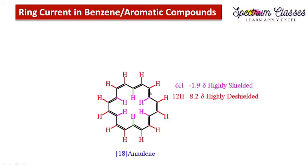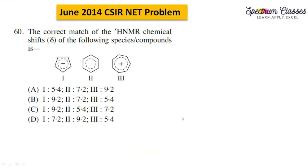Here is an example from a CSIR net question. This is the structure of 18-annulene. The peripheral protons of 18-annulene resonate at a high chemical shift value of 8.2 delta — they are highly deshielded. The inside protons are situated in the shielded zone, so they are highly shielded, with a chemical shift value of minus 1.9 delta.